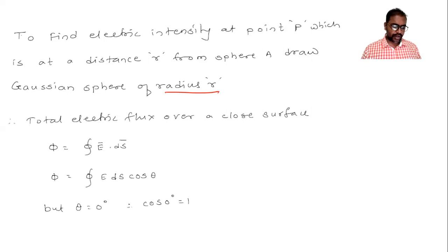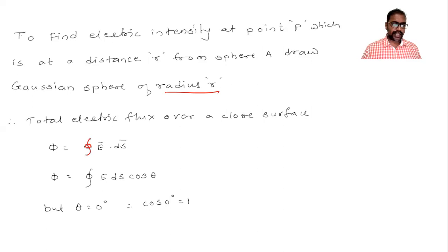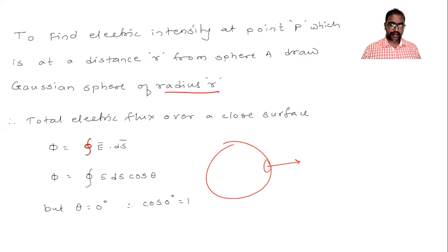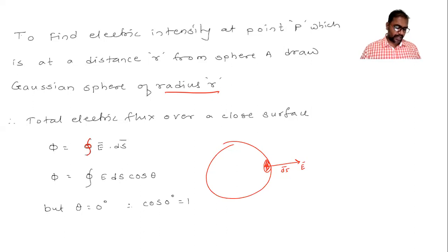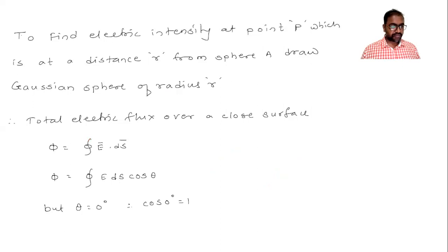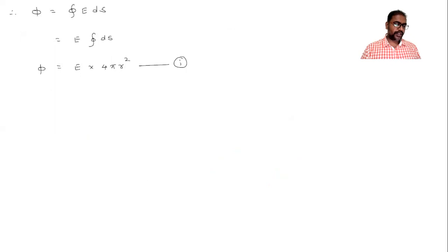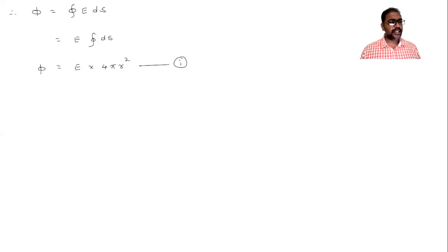Electric flux over a closed surface is given by the integration of E·dS over a closed path, which equals ∫E dS cosθ. Here, θ is the angle between the area vector and the direction of electric intensity. Since both the area vector and electric intensity are perpendicular to the surface element and point in the same direction, θ = 0°, so cos0 = 1. Therefore flux equals ∫E dS. Since E is constant on the Gaussian sphere, this gives E × 4πr².